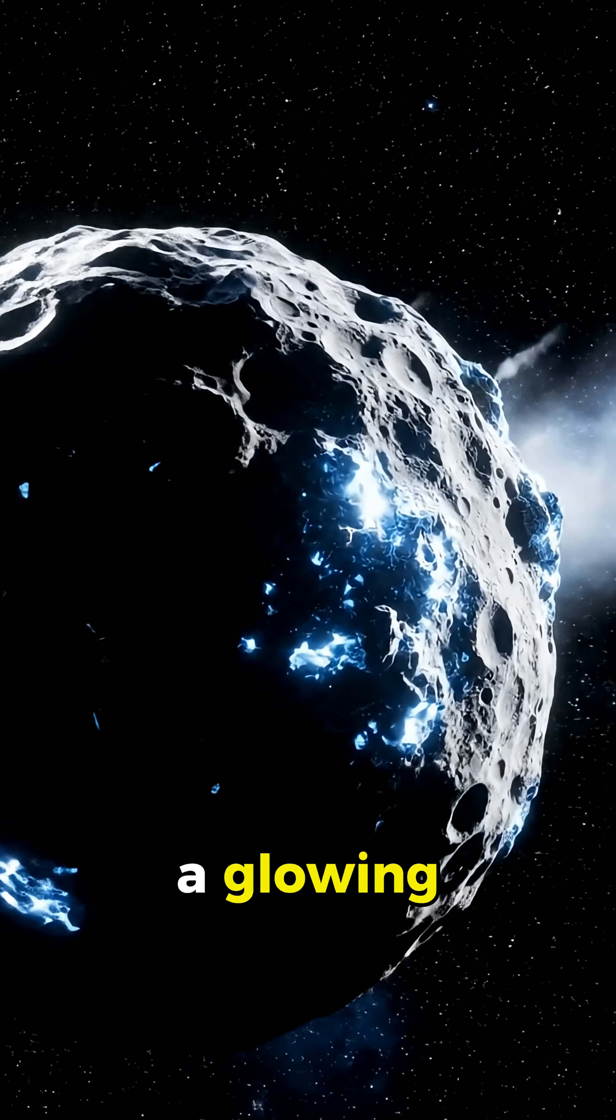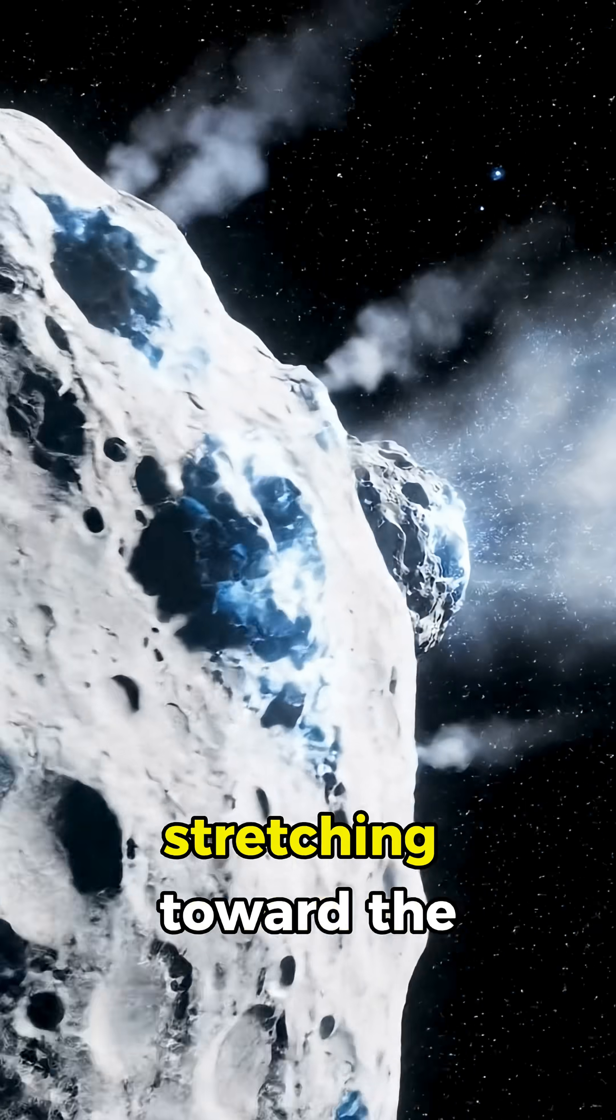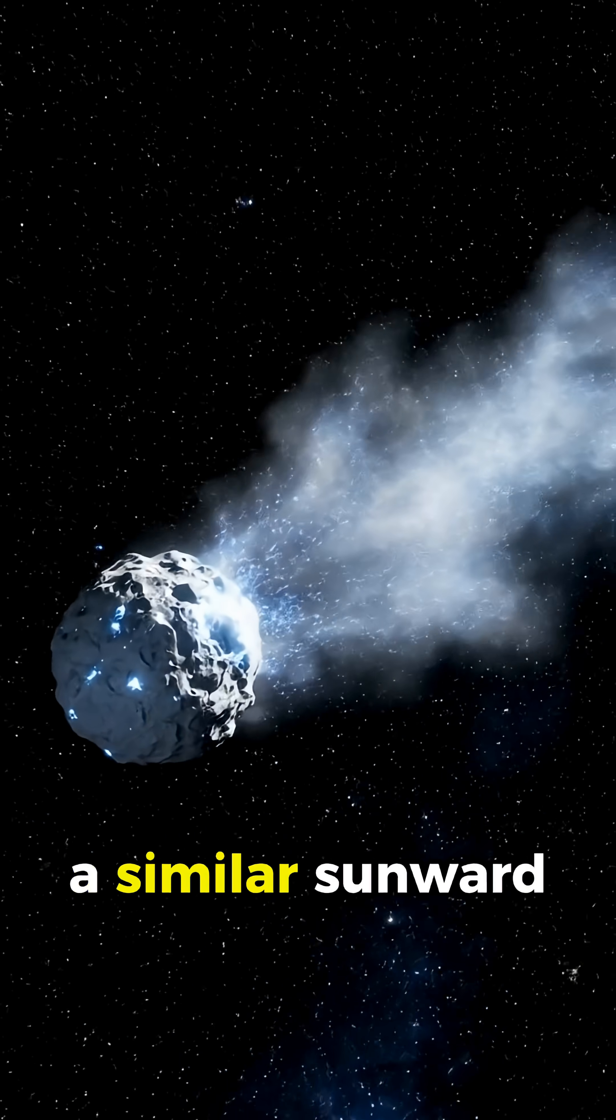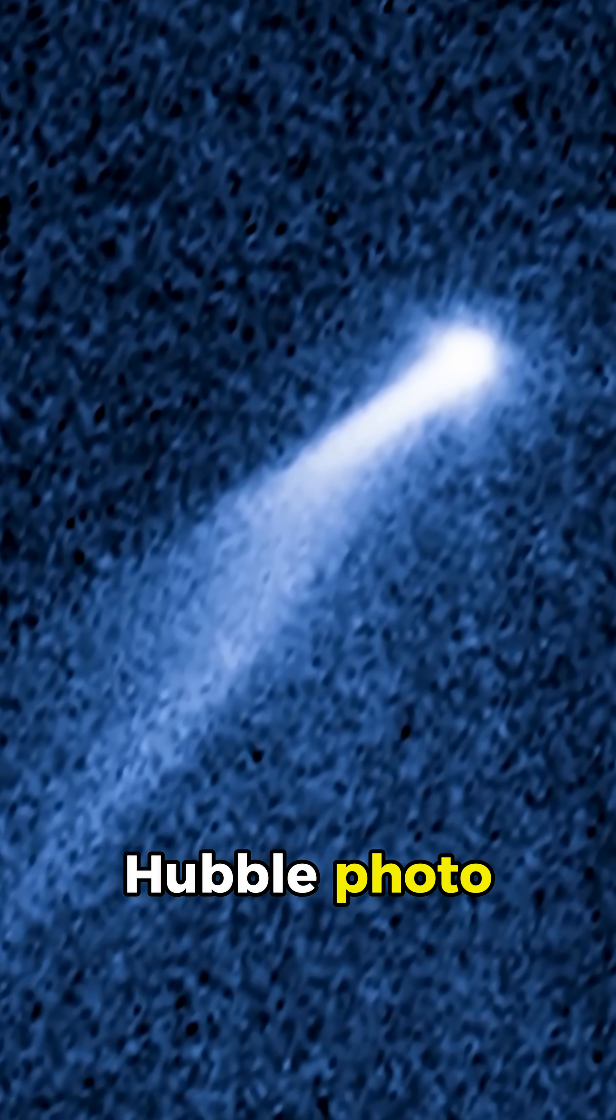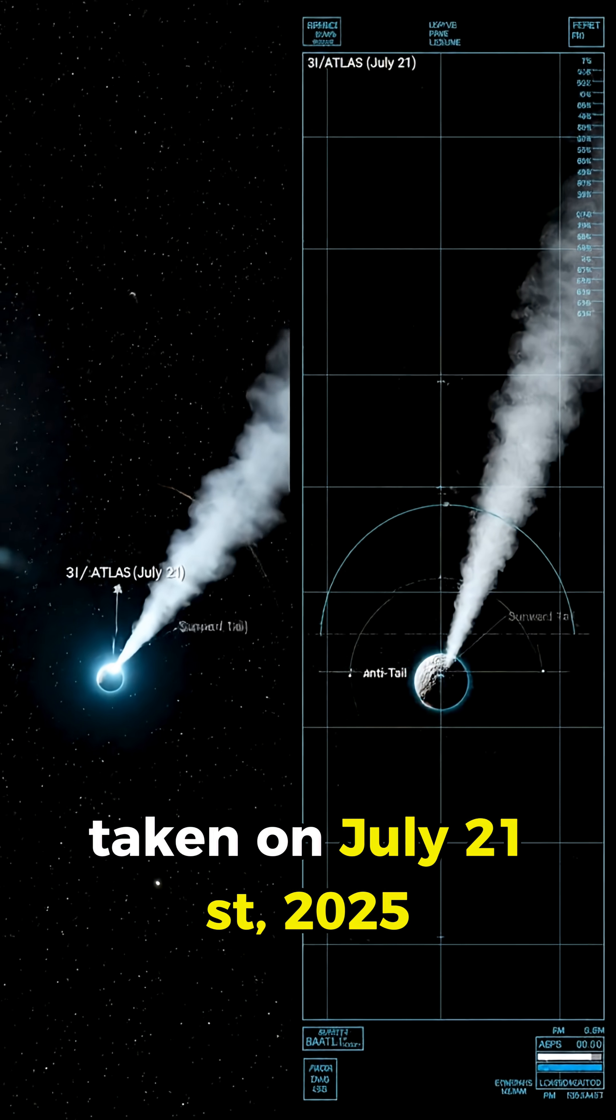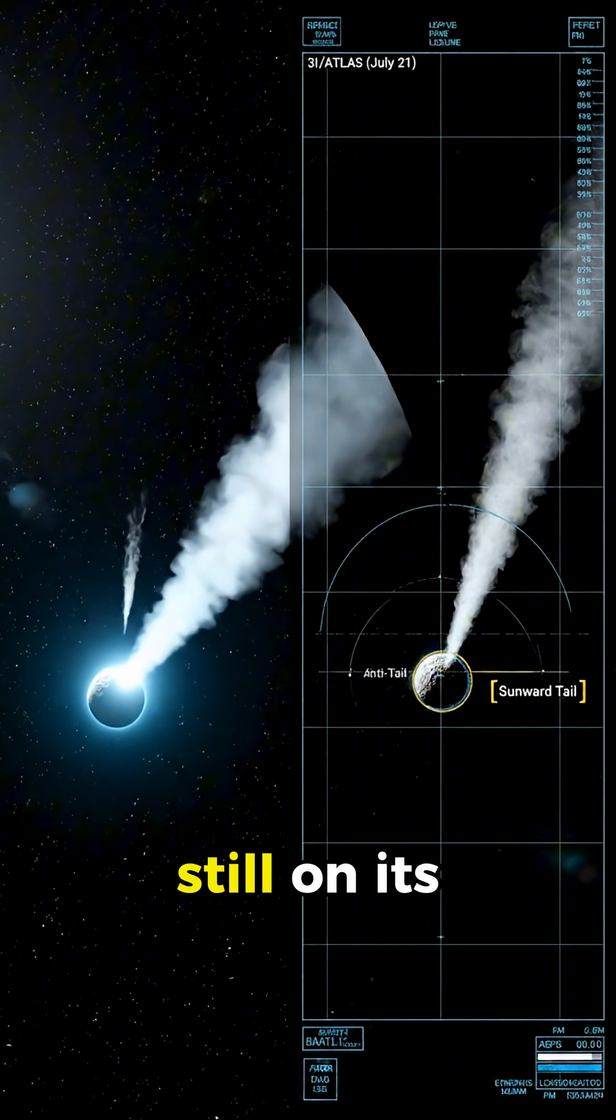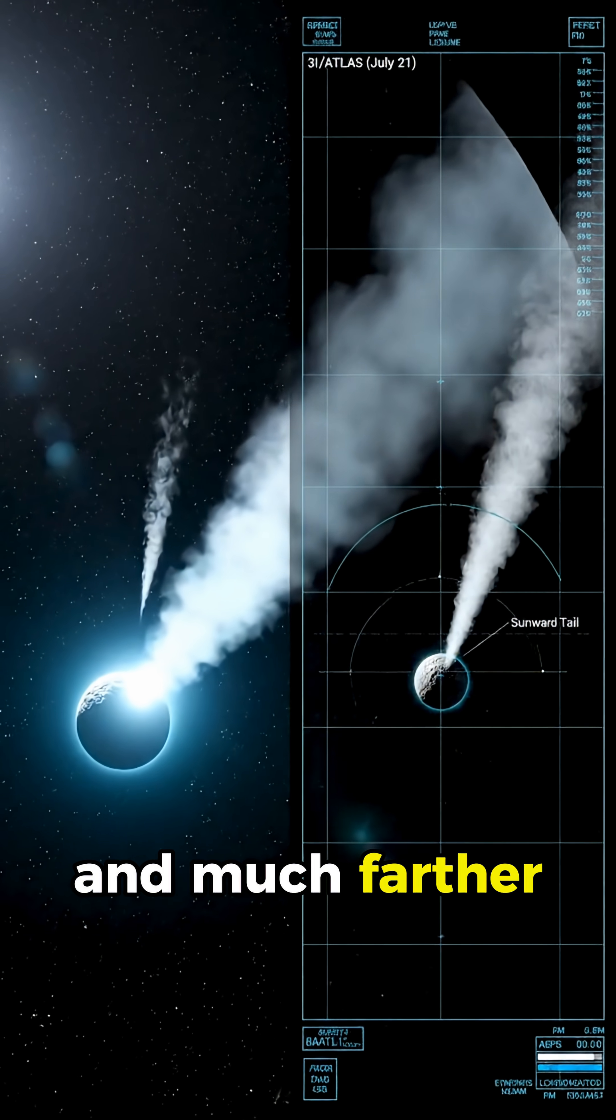In the photo, you can see a glowing, teardrop-shaped cloud stretching toward the sun. A similar sunward tail was already visible in an earlier Hubble photo taken on July 21, 2025, when 3I-Atlas was still on its way in and much farther from Earth.